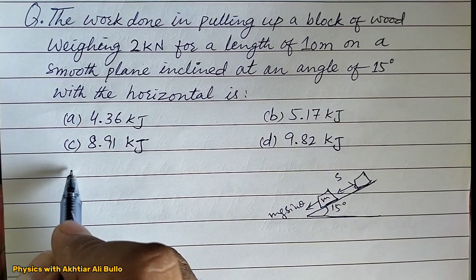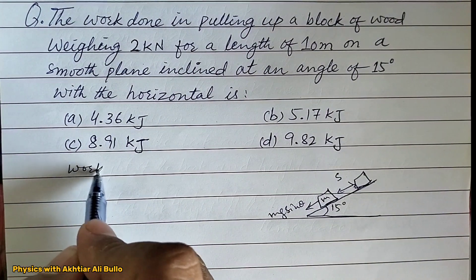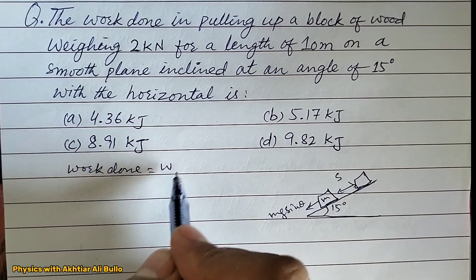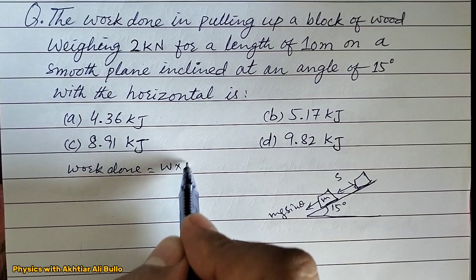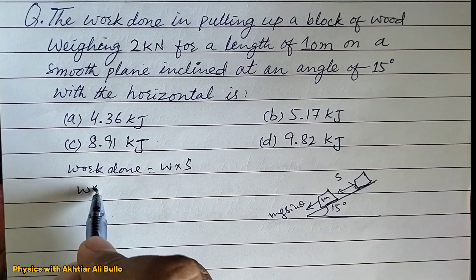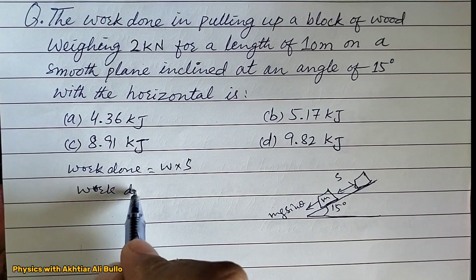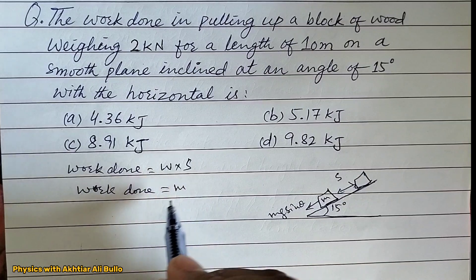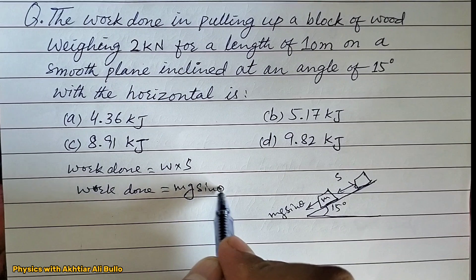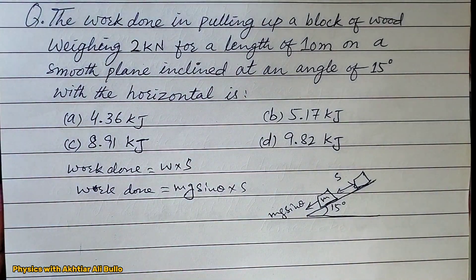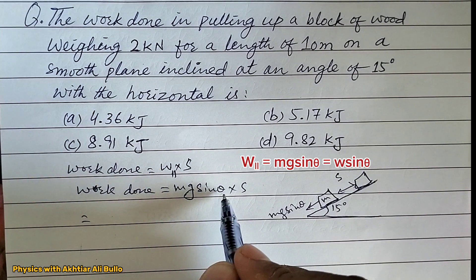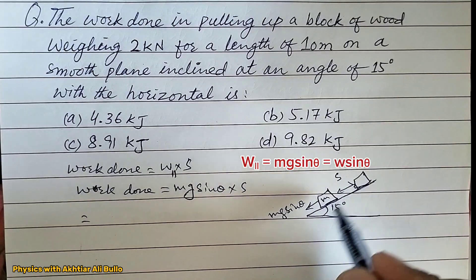Work done will be equal to weight into displacement. So work done will be equal to mg sin theta into displacement. This is the parallel component of weight, which is equal to mg sin theta into displacement.